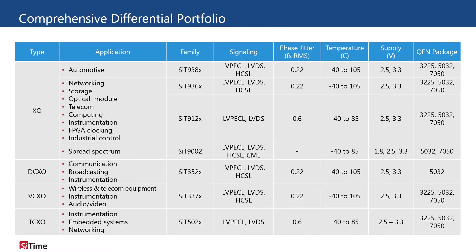In addition to the Atena family, SciTime has a wide portfolio of differential oscillators. The SIT93 series is an optimal choice for 100G optical modules with only 230 femtoseconds of RMS phase jitter and an operating temperature range up to 105 degrees centigrade. The SIT9002 differential oscillator has a spread spectrum output for a reduction in EMI.